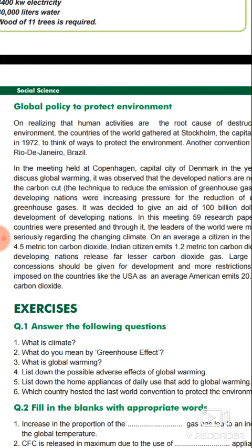Optimum use of petroleum products, electricity, means of transport, and water. Control population, and practice rainwater and water harvesting. These are the things we should follow.